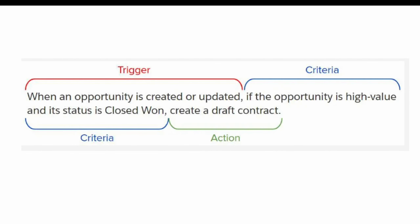Welcome to another video. This is the first use case we're taking up for record-triggered flows — taken from Trailhead. When an opportunity is created or updated, the first thing that's clear is that we have to work on the Opportunity object and execute the flow whenever it is created or updated.